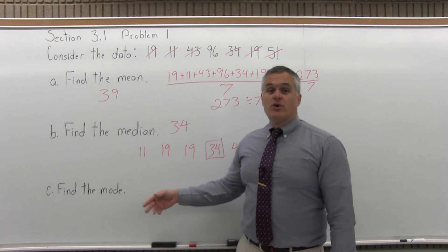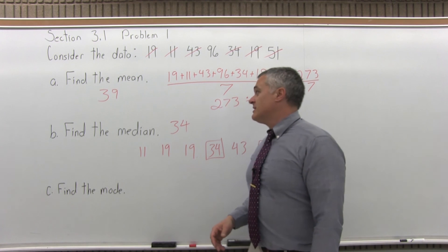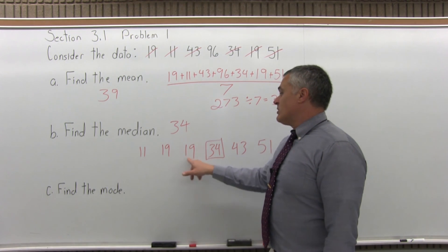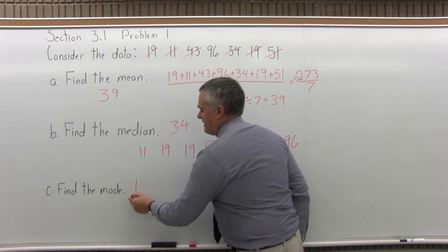And finally, find the mode. The mode is the most common, or the most repeated data value. So if you look, the only one that's repeated is 19. So the mode is 19.